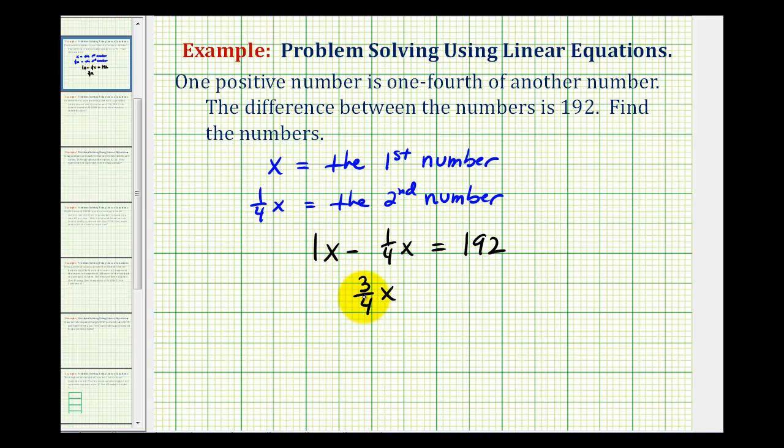And the coefficient would be one minus one-fourth, which is three-fourths. In case you don't see where this three-fourths came from—it's going to be an x term, and the coefficient would be one minus one-fourth, which we can write as one over one minus one-fourth. We have to have a common denominator, so we multiply this first fraction by four over four. So we'd have four-fourths minus one-fourth, which would be the three-fourths that we have here. And this is equal to 192.